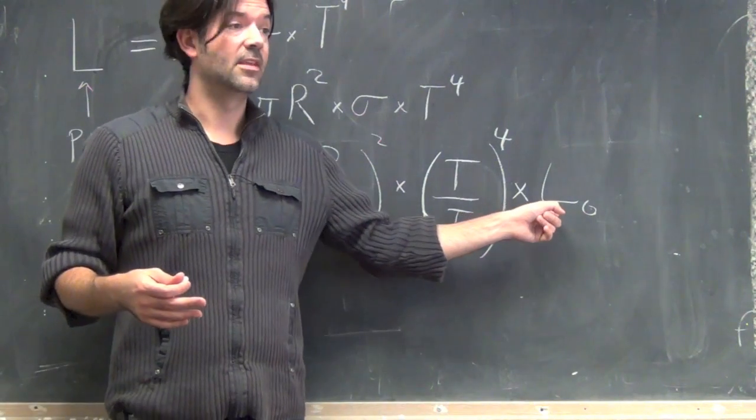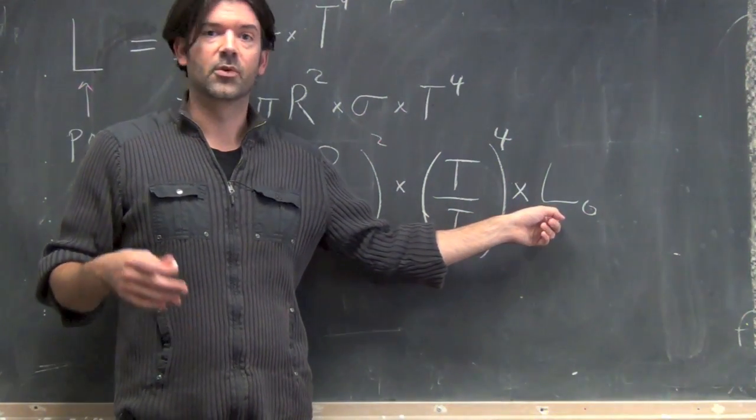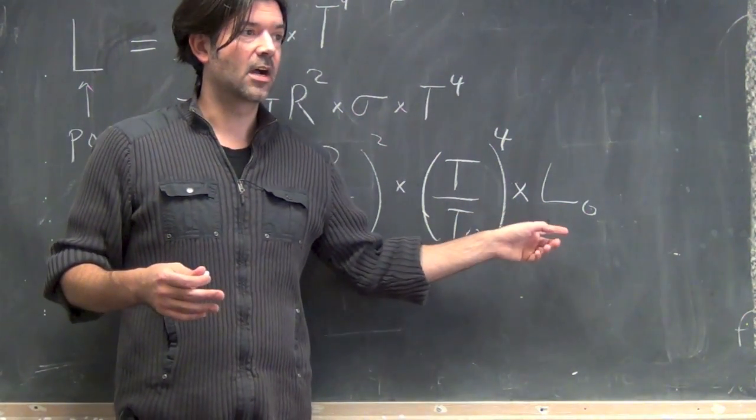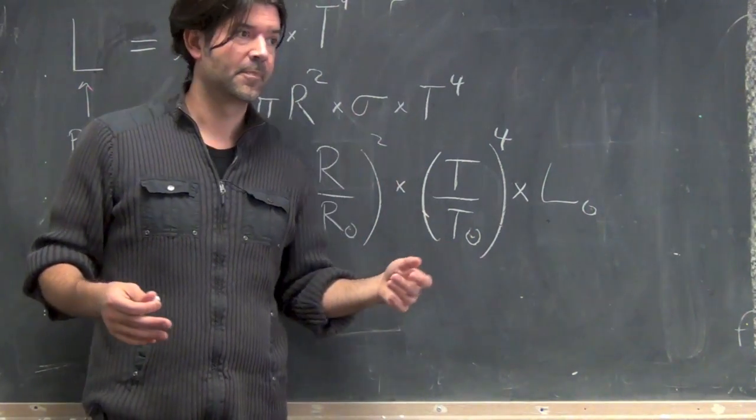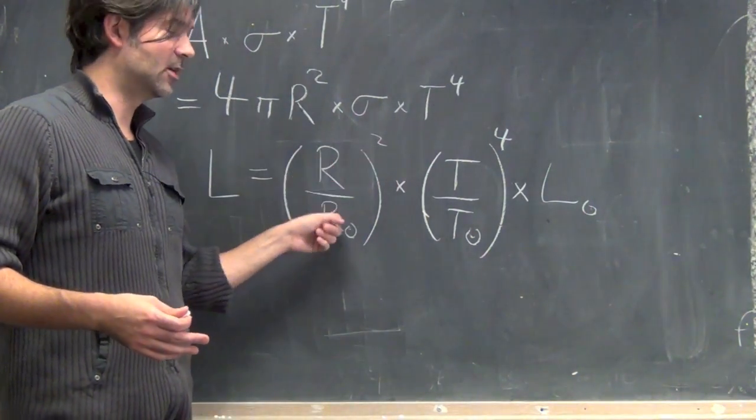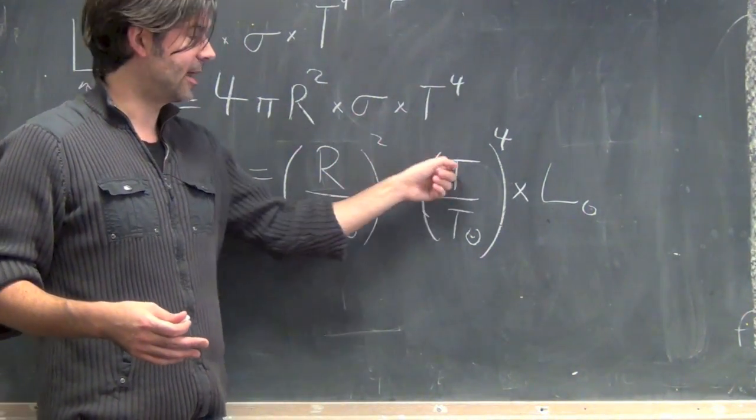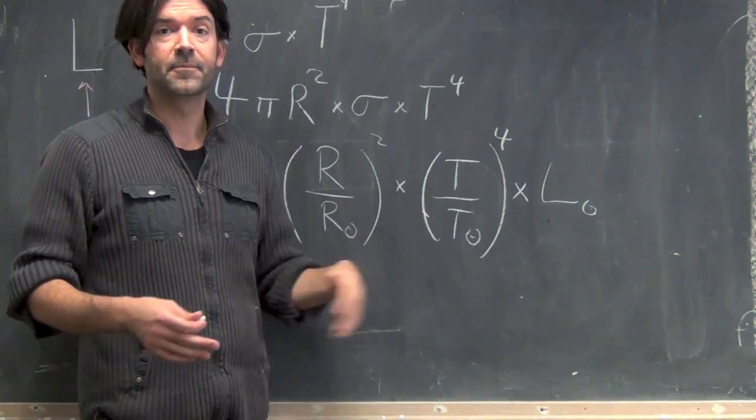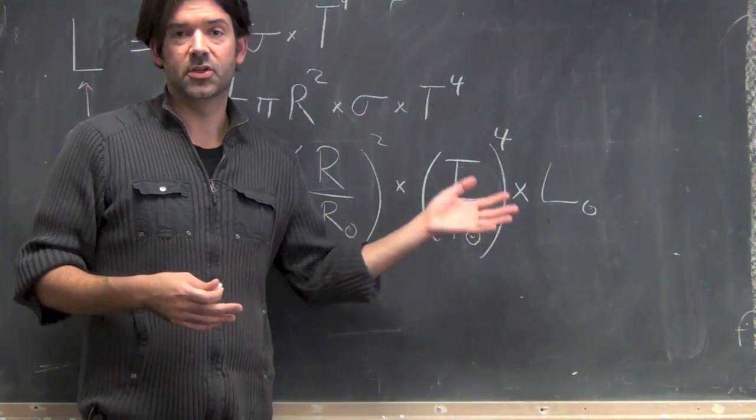we used the mass of the sun as the unit of mass instead of worrying about kilograms. Here we can now, instead of talking about the total wattage output, 4 times 10 to the 26 watts, we can talk about how the wattage compares to that of the sun. So, if you tell me how much bigger or smaller the star is relative to the sun, or how much hotter or cooler it is relative to the sun, I now have a simple expression to relate it.